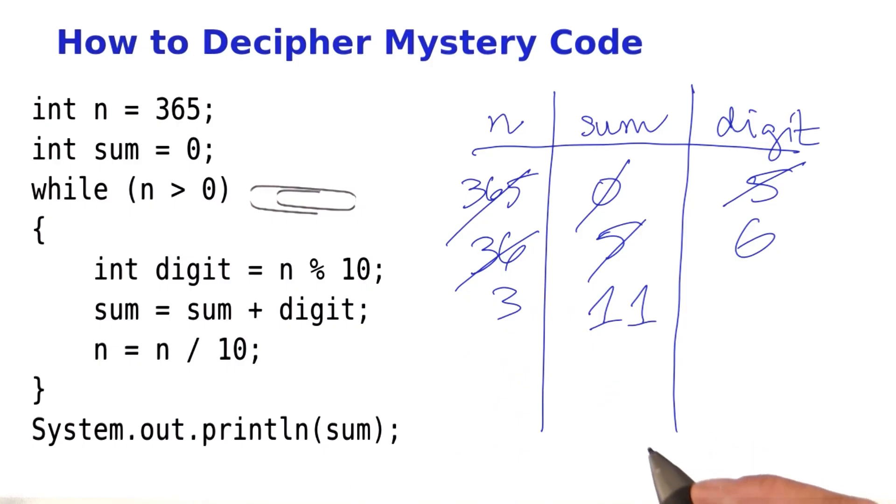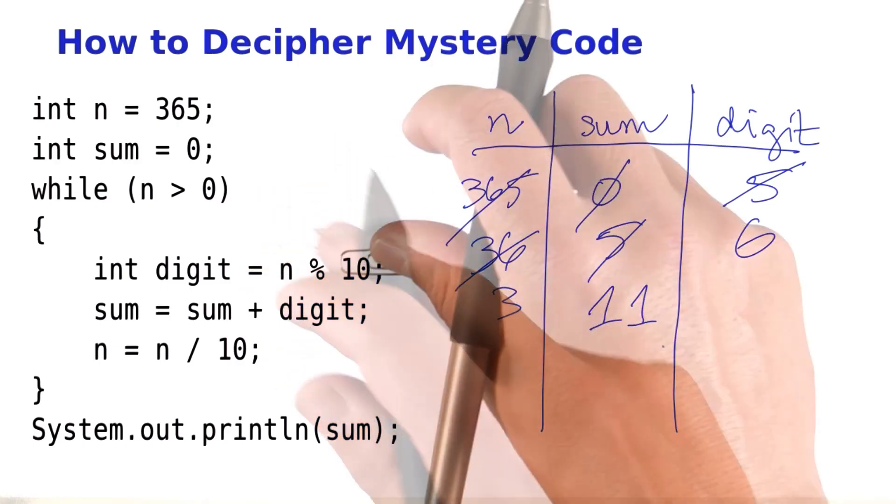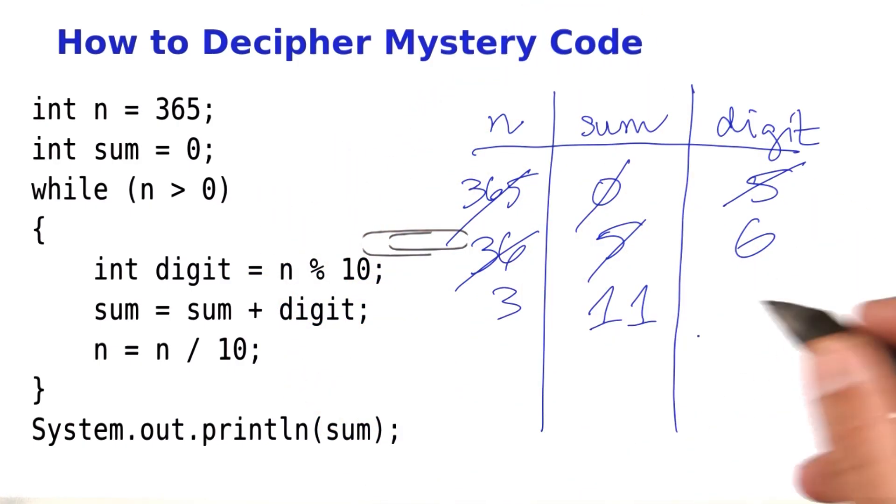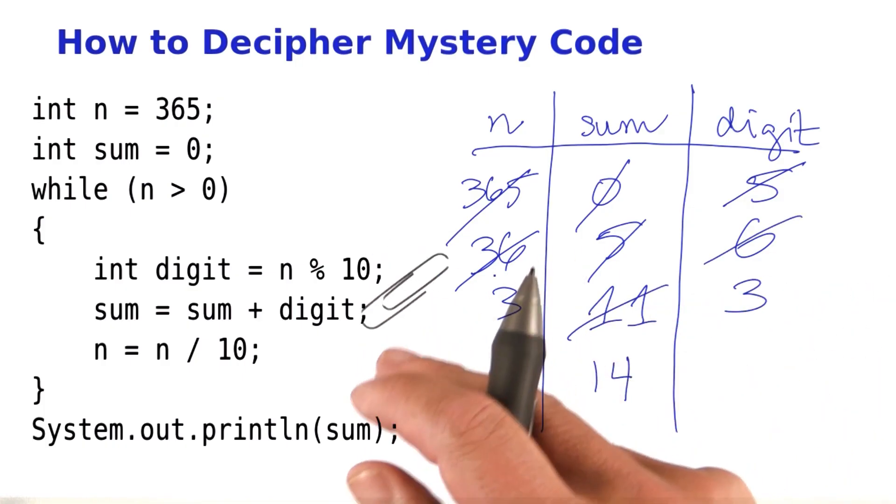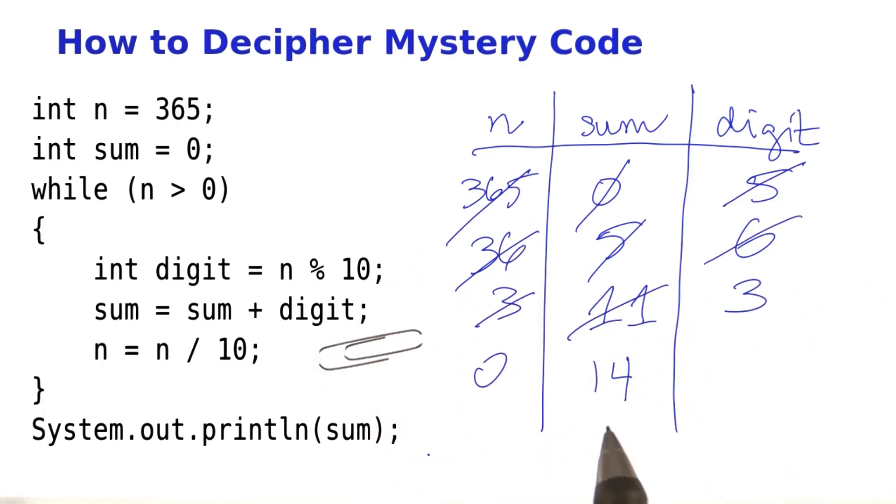Is 3 greater than 0? It barely is. So we stay in the loop. Now we need to take 3 mod 10. That's 3. Add it to the sum. Divide n by 10. That's an integer division. So now we get 0. 0 is no longer greater than 0. We fall out of the loop and go to the statement.